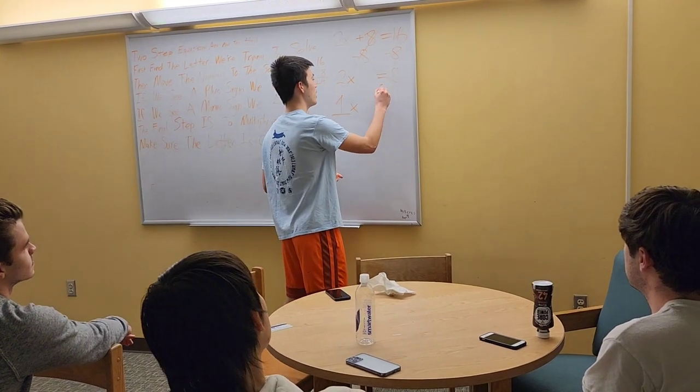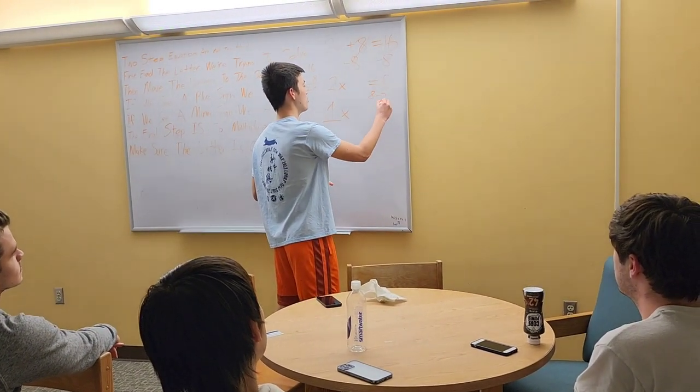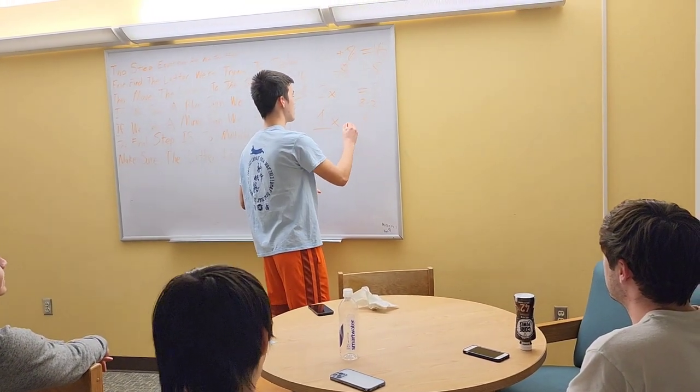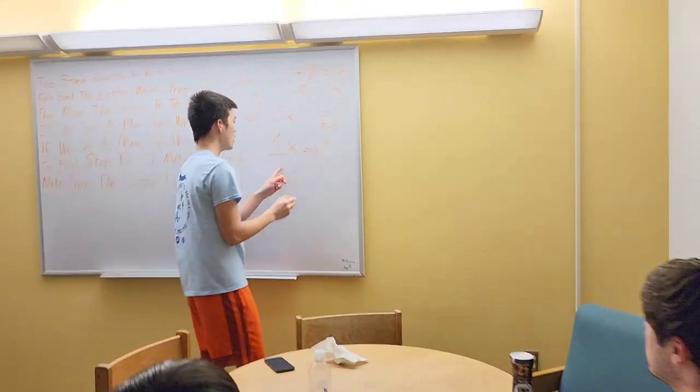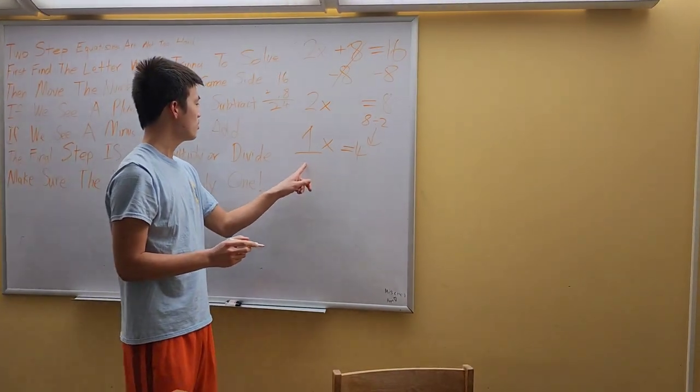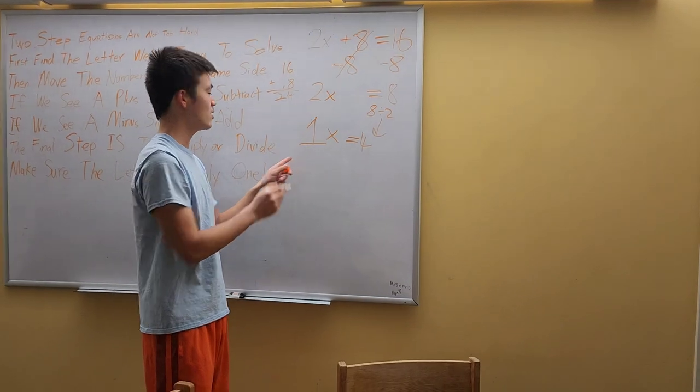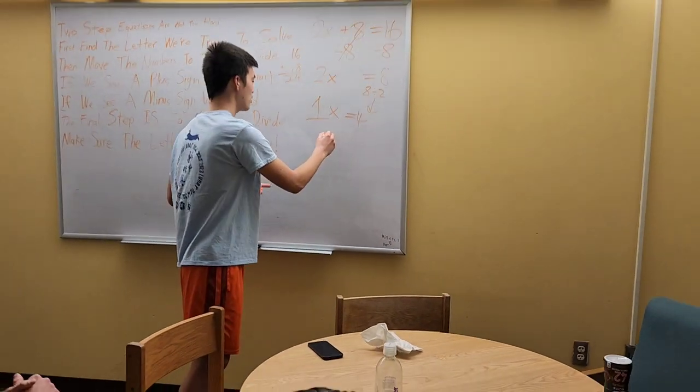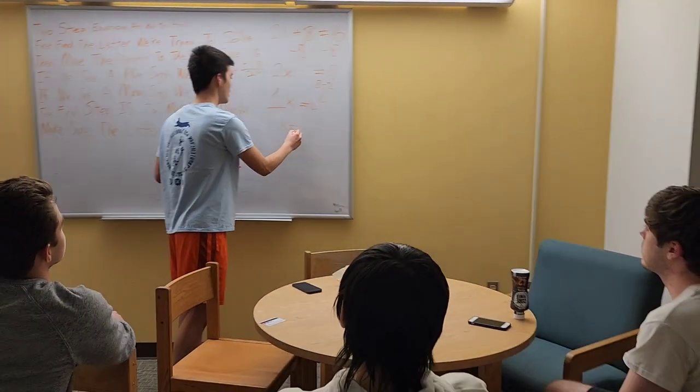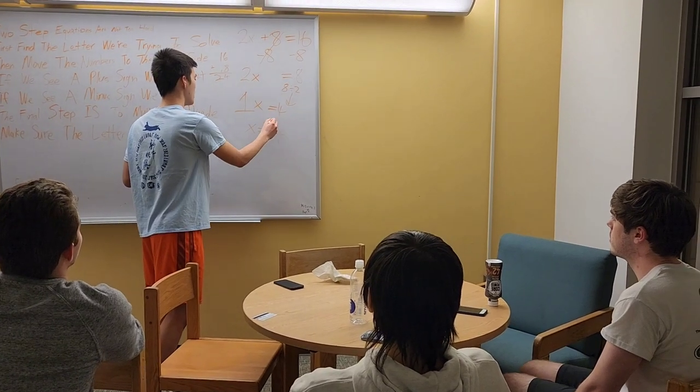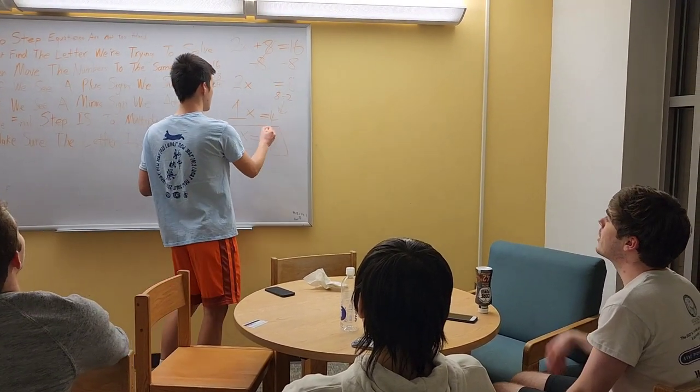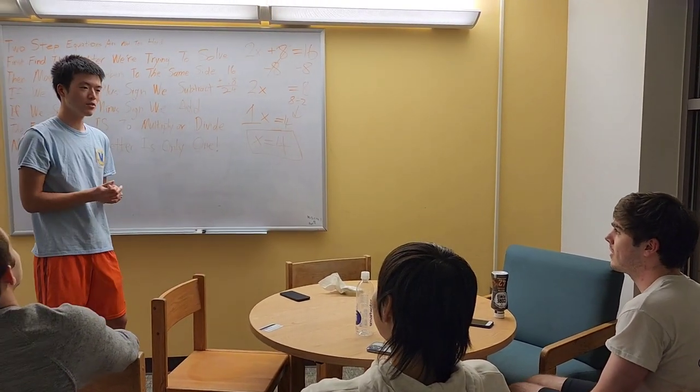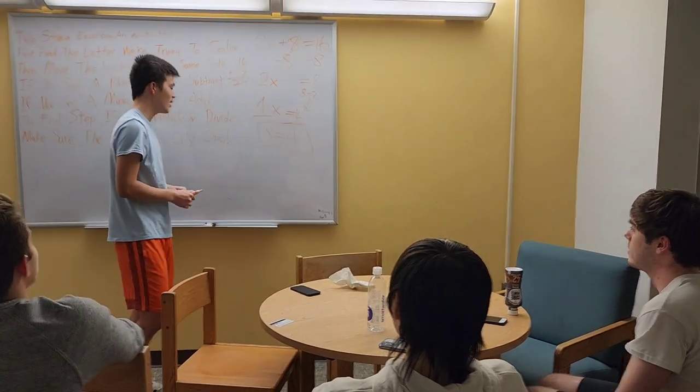So if we do 8 divided by 2 over here, you just get 4. And the 1 here, you can ignore because it doesn't change anything. So the final answer that we should have is x equals 4. "Oh, I see. x is equal to 4." Yes. I might have misspoke. Thank you for correcting me.